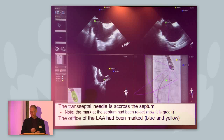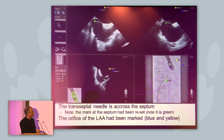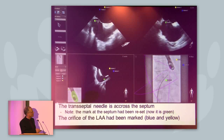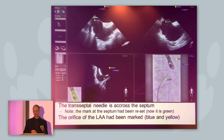The transseptal needle is now across the septum, and for some reason we had to remark the septum here, so it's green now. This is the site where you punctured the interatrial septum, and then two marks were placed at the left atrial appendage — this is the pulmonary vein ridge, and this is the circumflex — which helps you find the left atrial appendage.